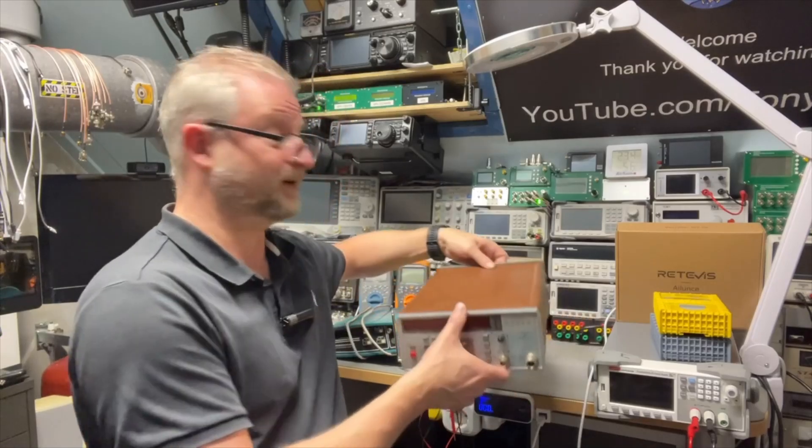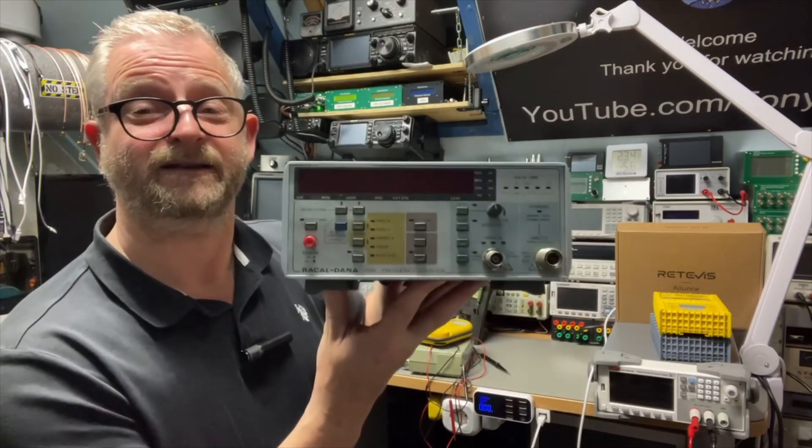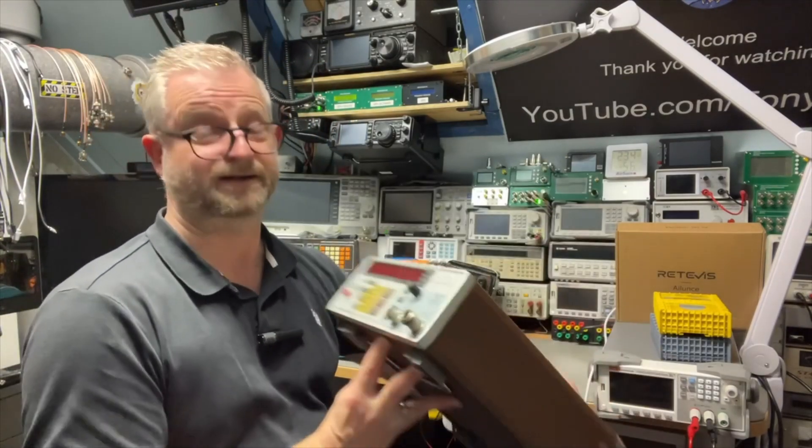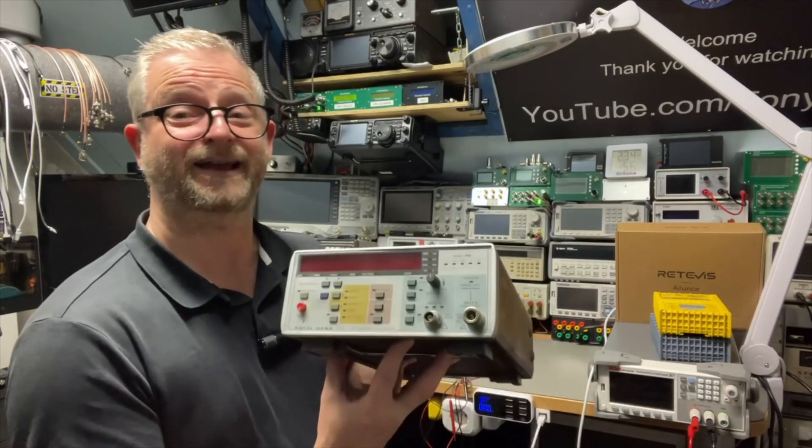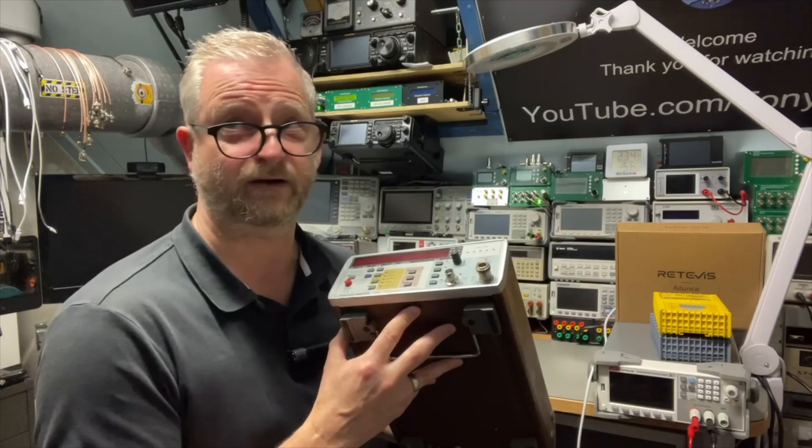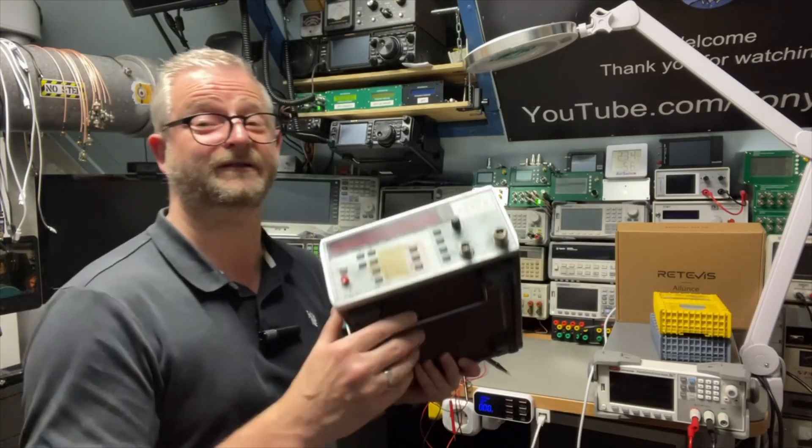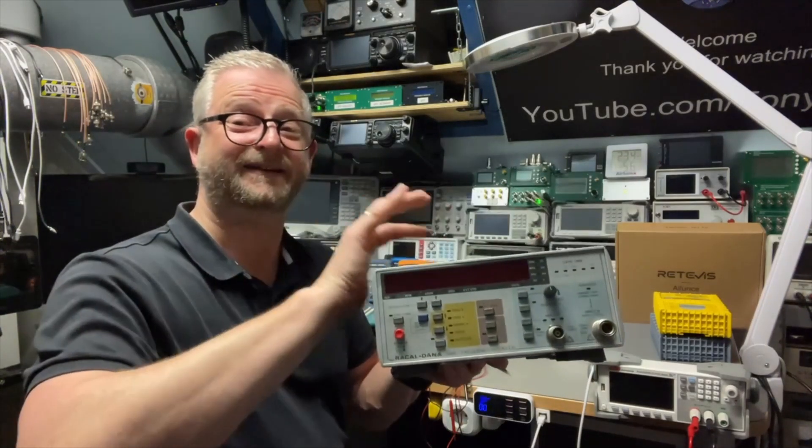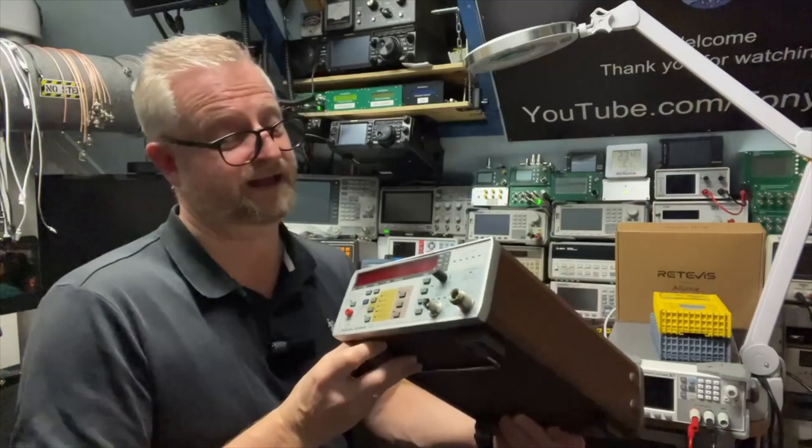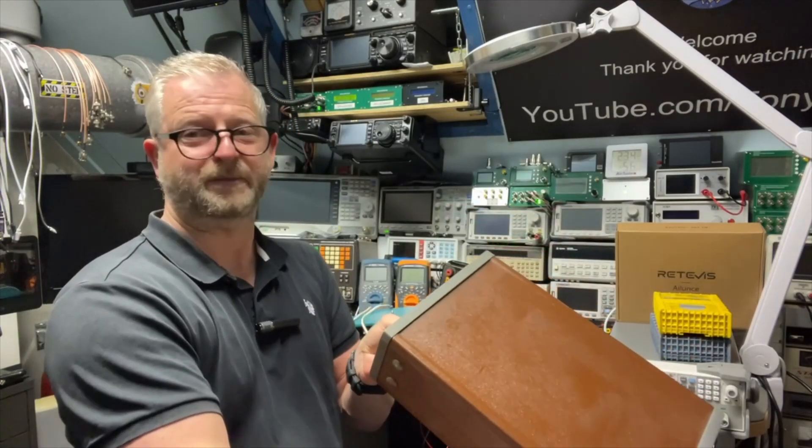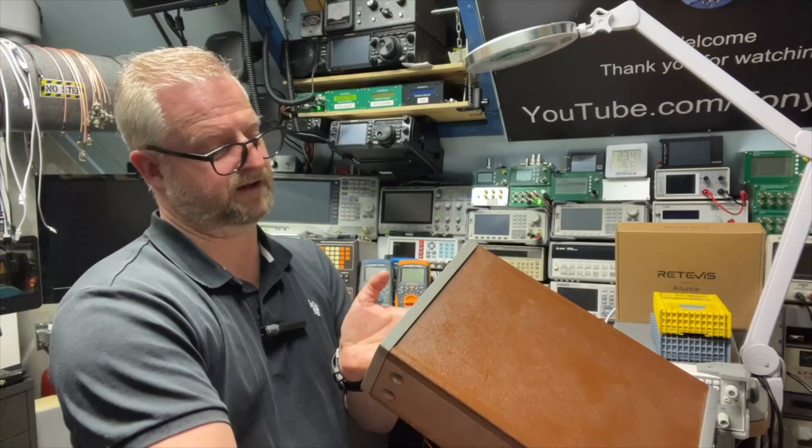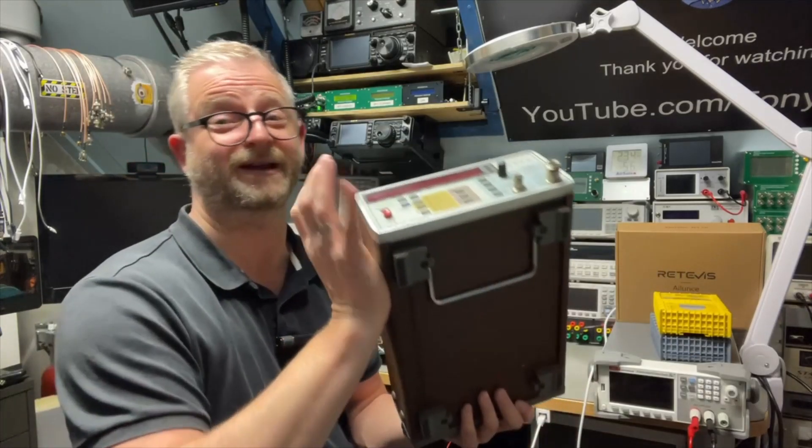Also, we already have seen the Racal-Dana 1992 with the standard oscillator. Then we had the 1998 with I think the 04A, the better oscillator. This is the 1999 with an even better oscillator. I think it's the 04B.